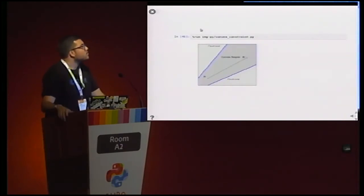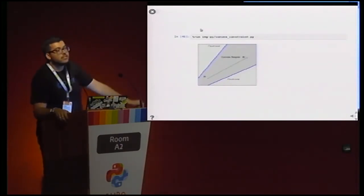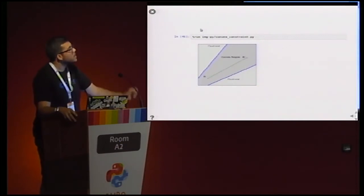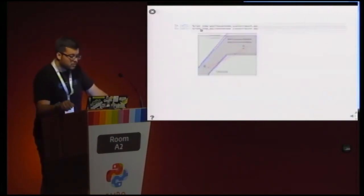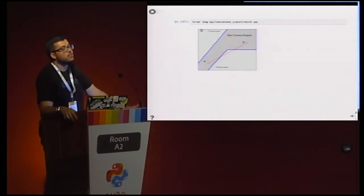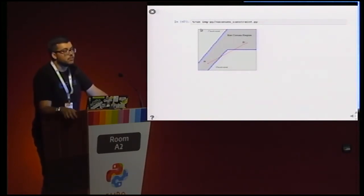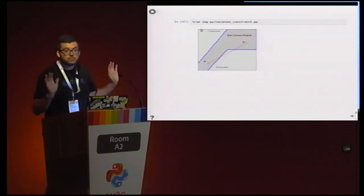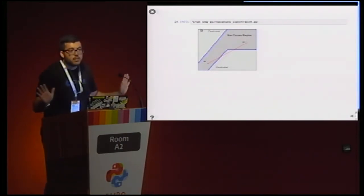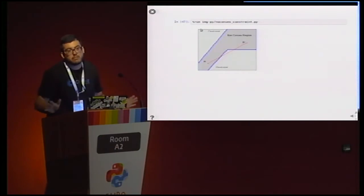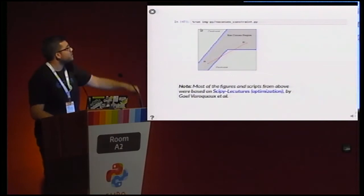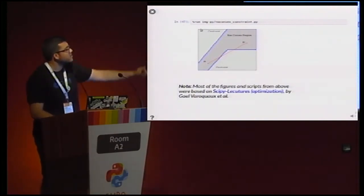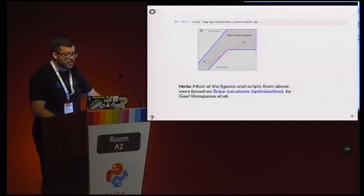The region found with constraints should be a convex region to be sure you are at a global optimum point. Because if you have a non-convex region, you can never be sure you are at a global optimum — you can only assure the solution is a local minimum or local maximum, but not the best solution. Most of the figures and scripts are from a Scikit-learn lecture. Thank you, Gael Varoquaux.